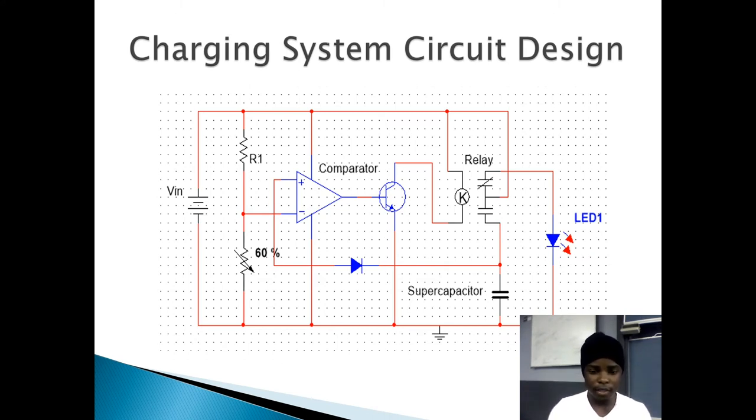The comparator is used to compare the voltage from the super capacitor to the rated voltage, which is 2.5 volts. The transistor is used to amplify the current that comes from the comparator to the relay. The relay is used as a switch, as it helps to stop the charging and initiate the charging. The LED in the system is used as a user interface, so that the user is capable of seeing whether the super capacitor is fully charged or not.